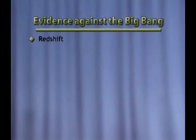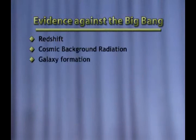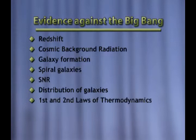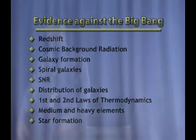But now, let's look at the evidences that go against the Big Bang. And notice what they are. Redshift to starlight, cosmic background radiation, galaxy formation, spiral galaxies, supernova renders, distribution of galaxies, first and second laws of thermodynamics, medium-heavy elements, star formation. And we can go on and on and on. How many of those are mentioned in textbooks? There really aren't. But notice this one thing. The evidence used to support the Big Bang. There's also evidence in the same things like the redshift that go against the Big Bang. All those are left out of our textbooks.